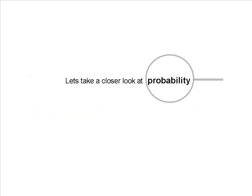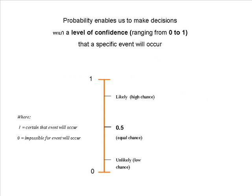Now we know how probability is used in everyday life, whether it's to minimize risks or maximize opportunities. Let's take a closer look at probability. Probability enables us to make decisions with a level of confidence that a specific event will occur. Probability values range from 0 to 1, where a probability of 0 indicates that it is impossible for the event to occur, whereas a probability of 1 indicates that it is certain that the event will occur.